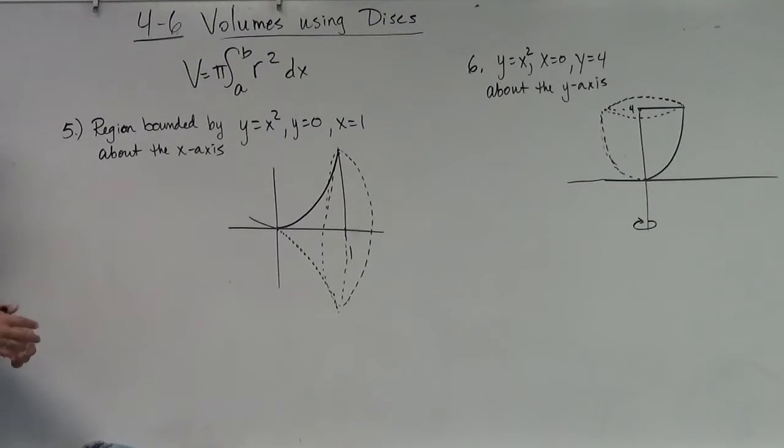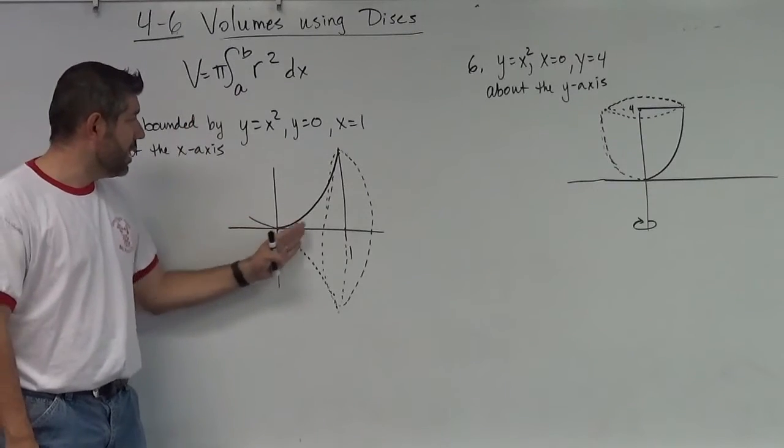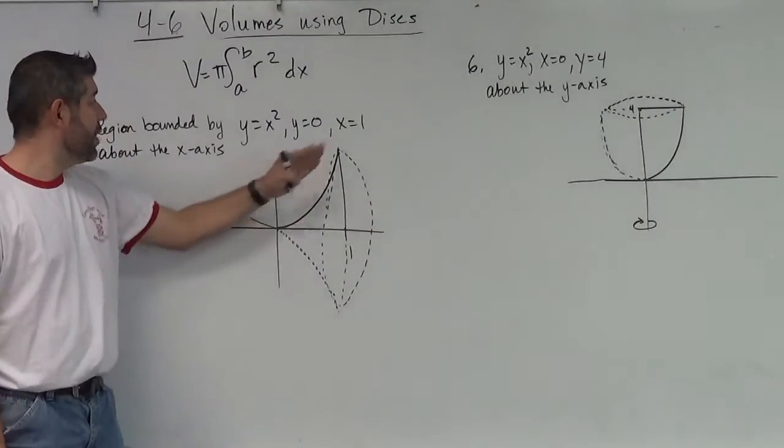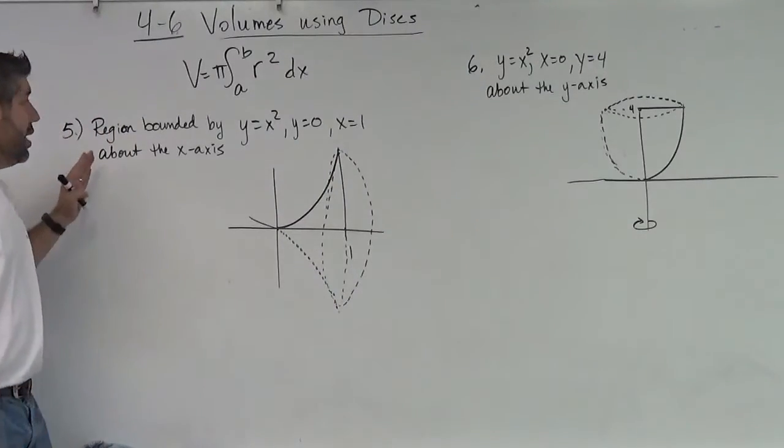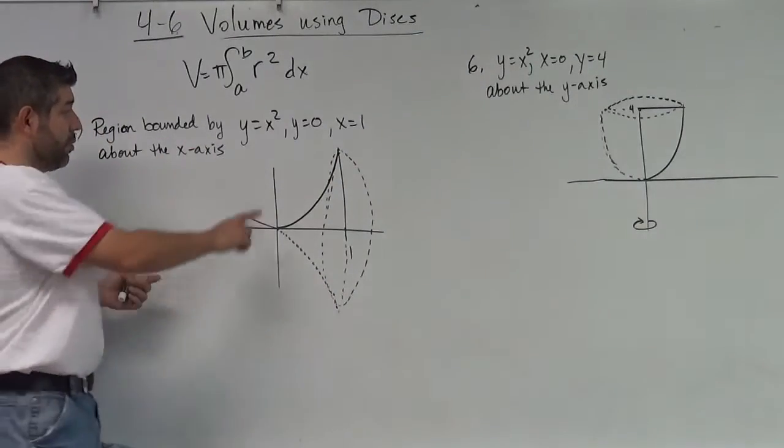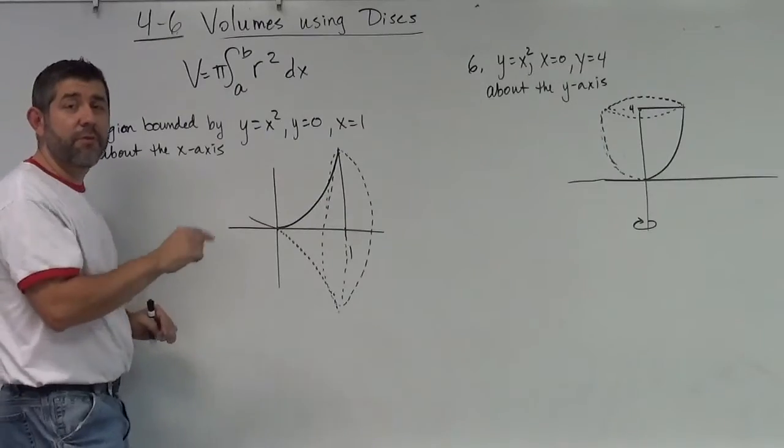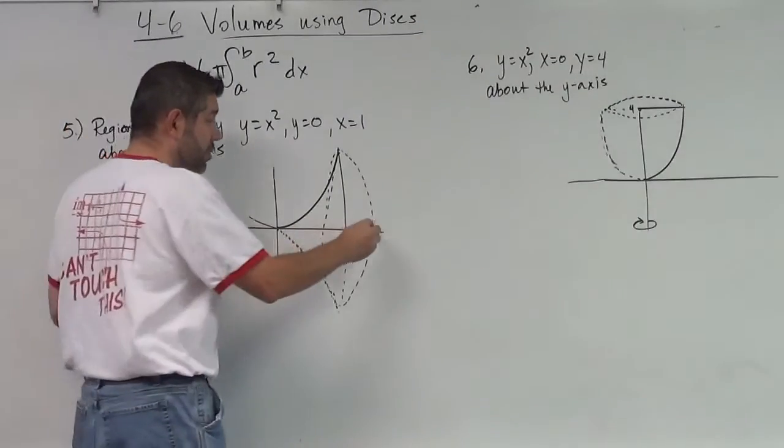Here's what happens with these that are a little bit different. Let's suppose I have the region bounded by y equals x squared, this is right here, and y equals zero and x equals one, and I rotate this, I revolve it about the x-axis.